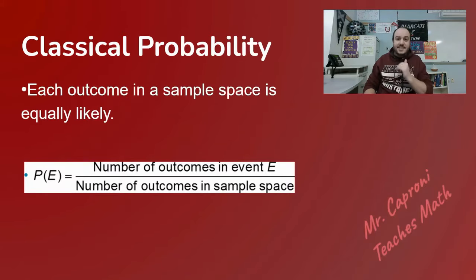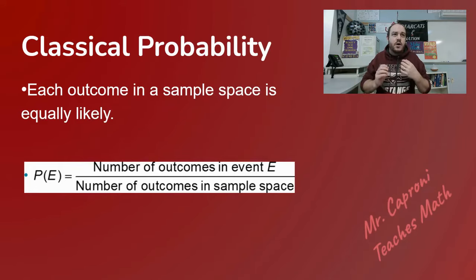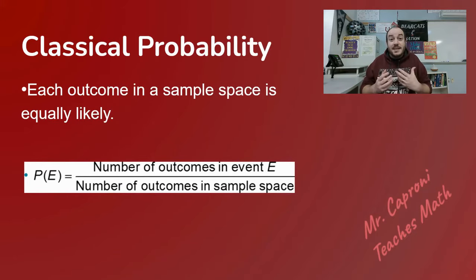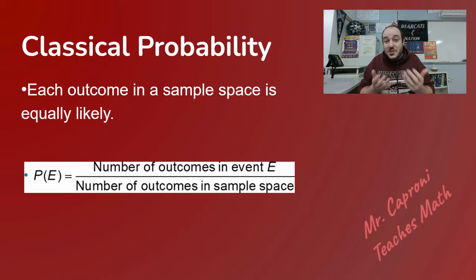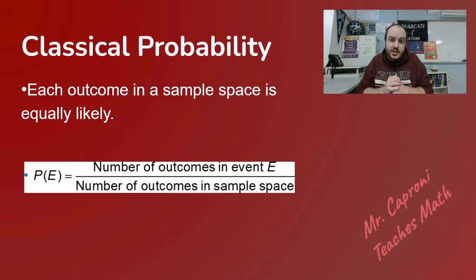We're going to start off by looking at classical probability. Classical probability is your typical ACT question or classroom type of probability — it's the chance of rolling a specific number on a die, drawing cards from a deck, or drawing a name from a hat. In other words, it's any type of probability where all outcomes have the same chance of occurring. When you roll a die, the numbers one through six all have the same chance of coming up, and that's what makes it a classical probability question.